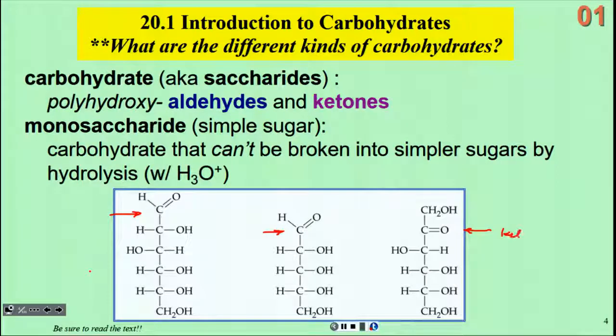These two here have aldehydes, this one has a ketone, and every other carbon in most cases will have an OH group, an alcohol group on it. The monosaccharides are the simplest ones - carbohydrates that cannot be broken down into simpler sugars by hydrolysis. There are three examples of simple sugars shown here, two are aldose and the third is a ketose.